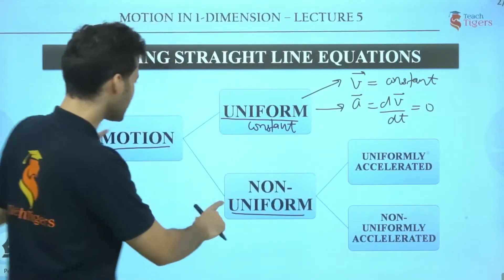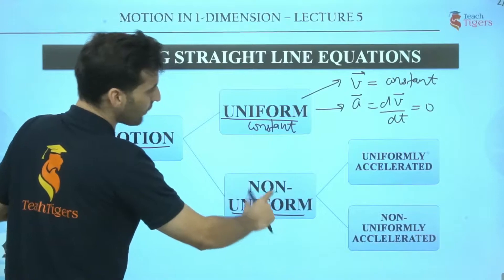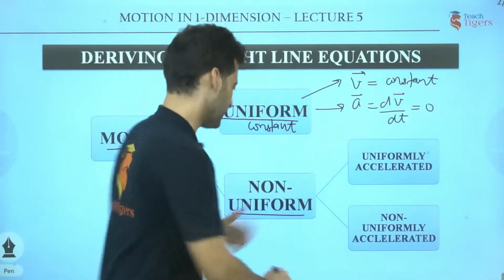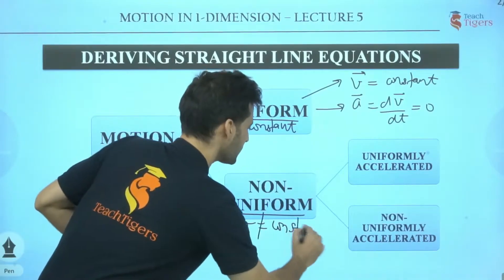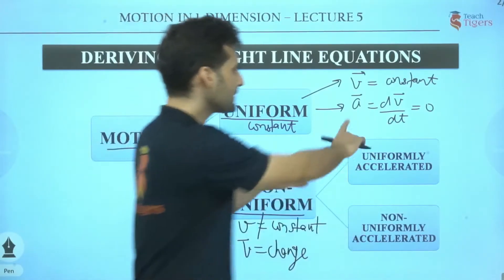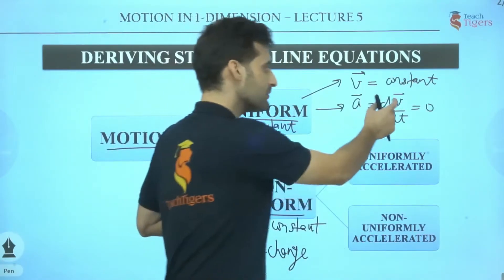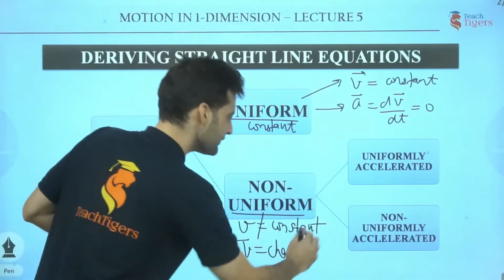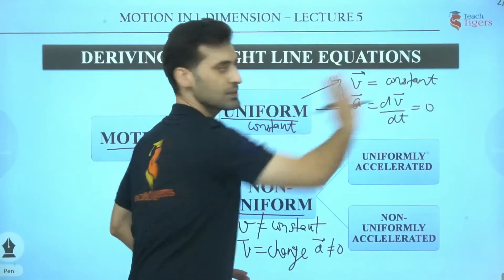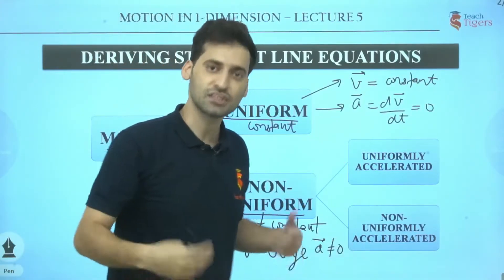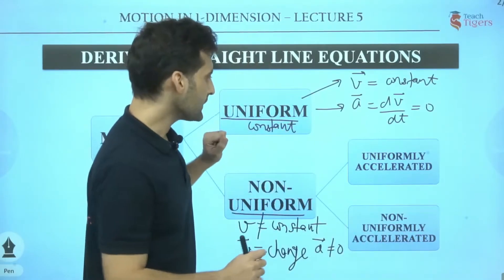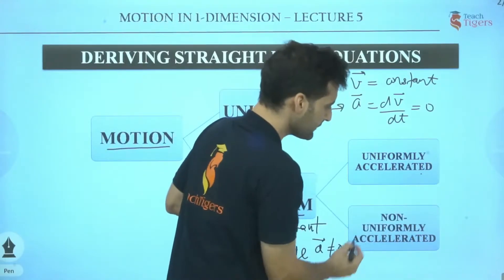The first category of motion is Uniform Motion, in which we have constant velocity and acceleration becomes zero. The next category is Non-Uniform Motion. In Non-Uniform Motion, velocity is not constant — velocity will change. Since velocity will change and acceleration is defined as dv/dt, there must be some dv and some dt, so definitely acceleration will not be equal to zero.